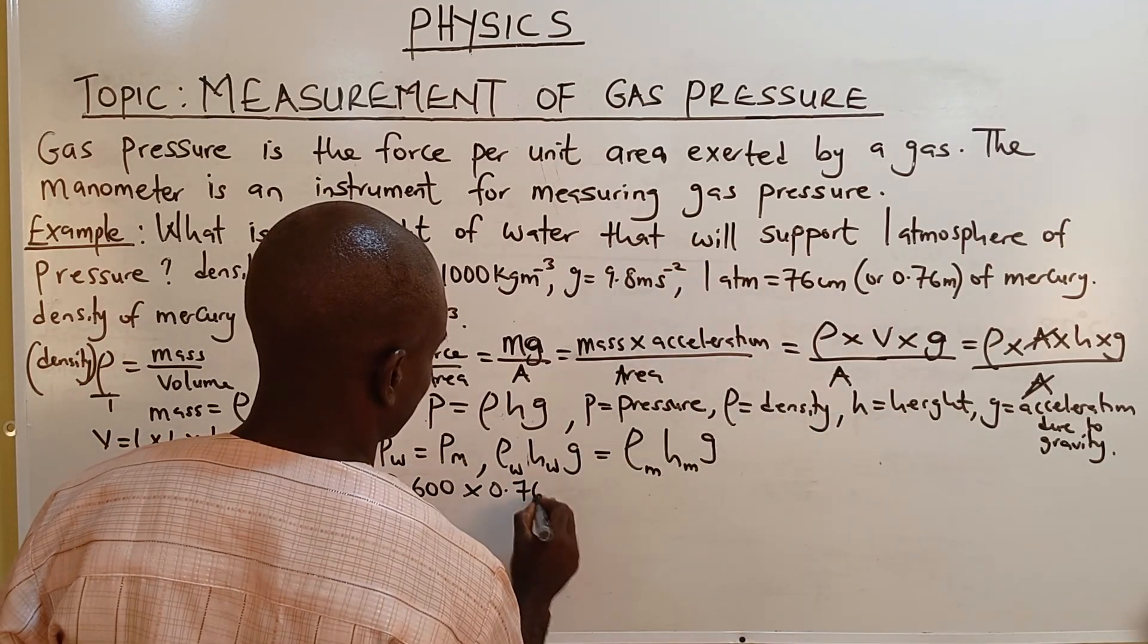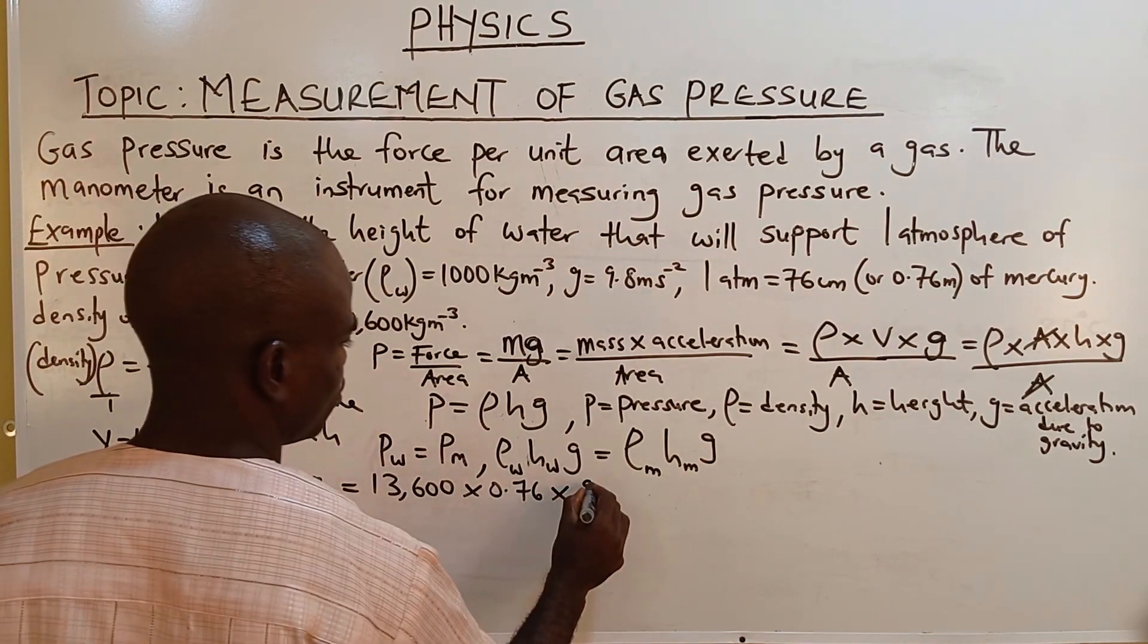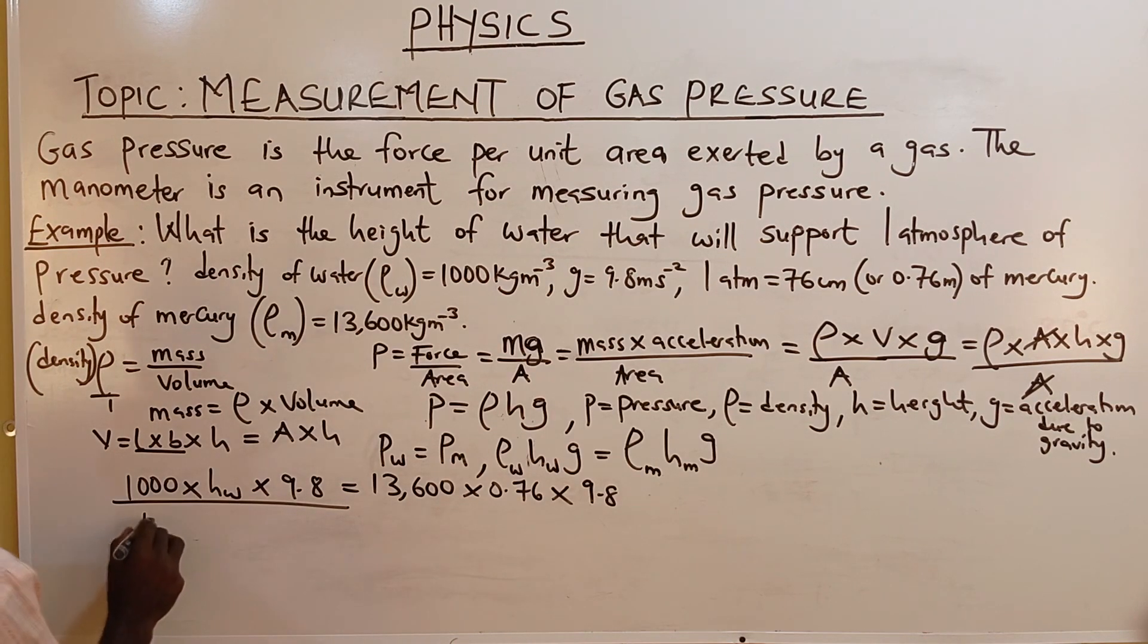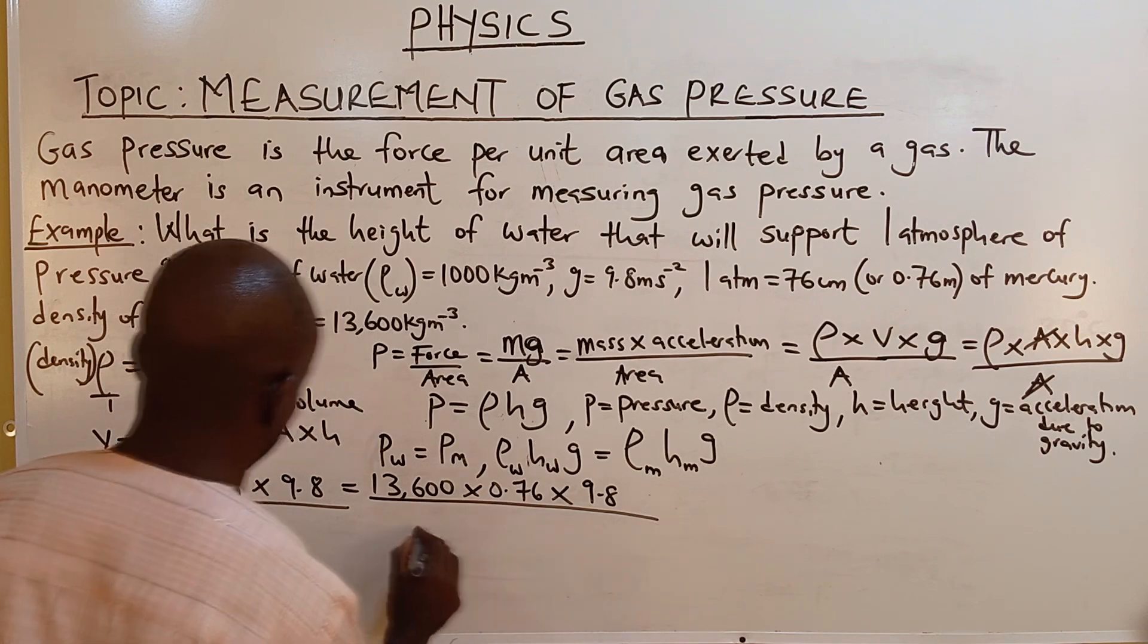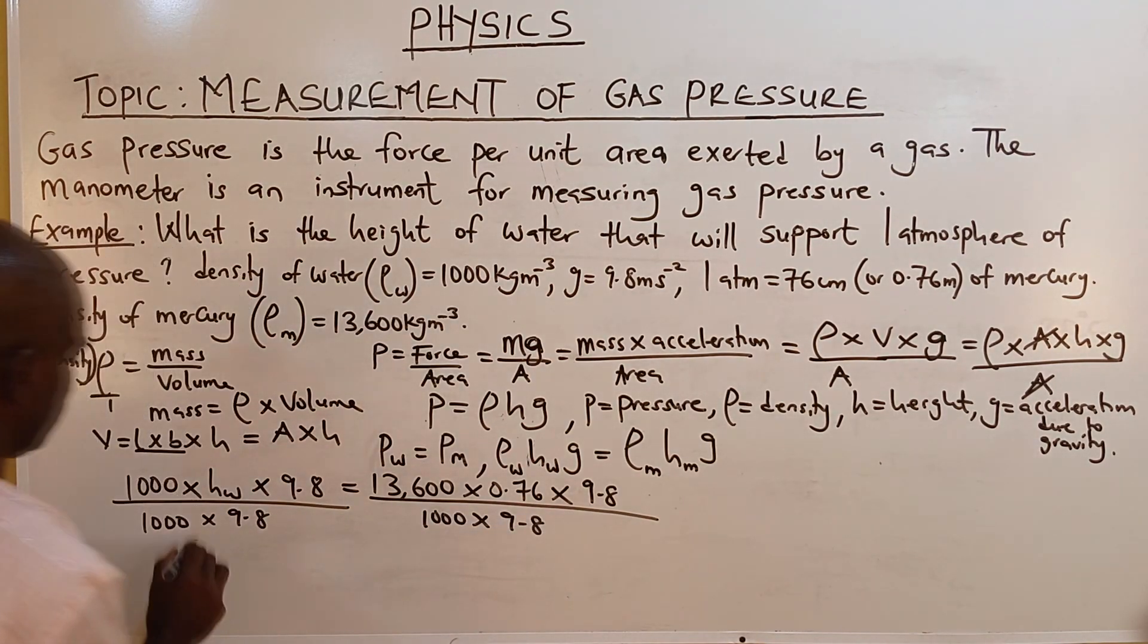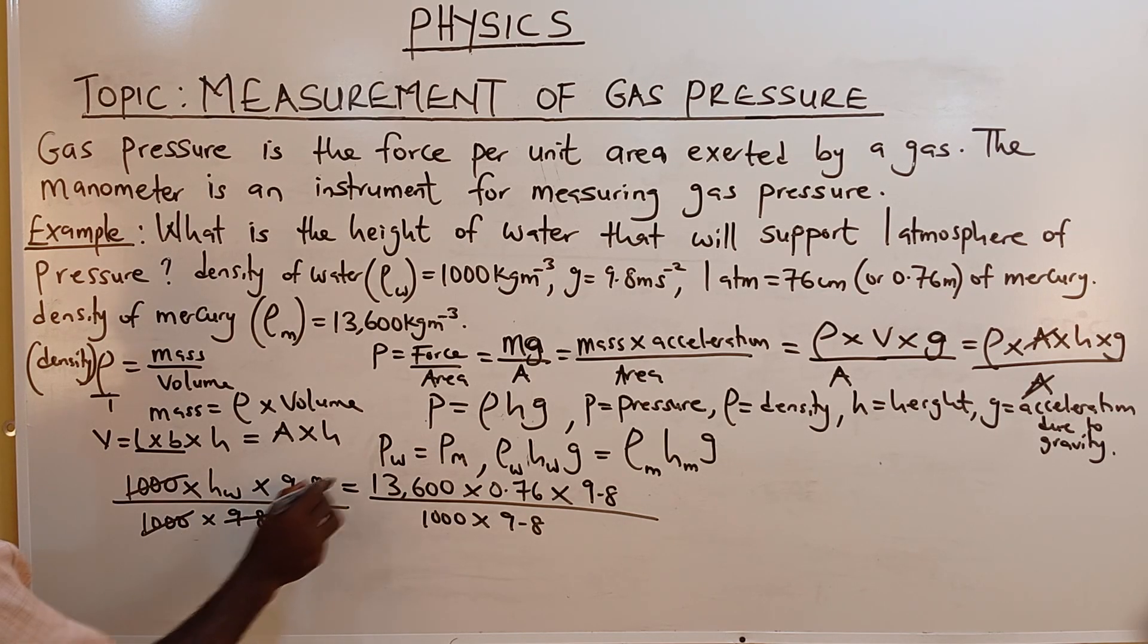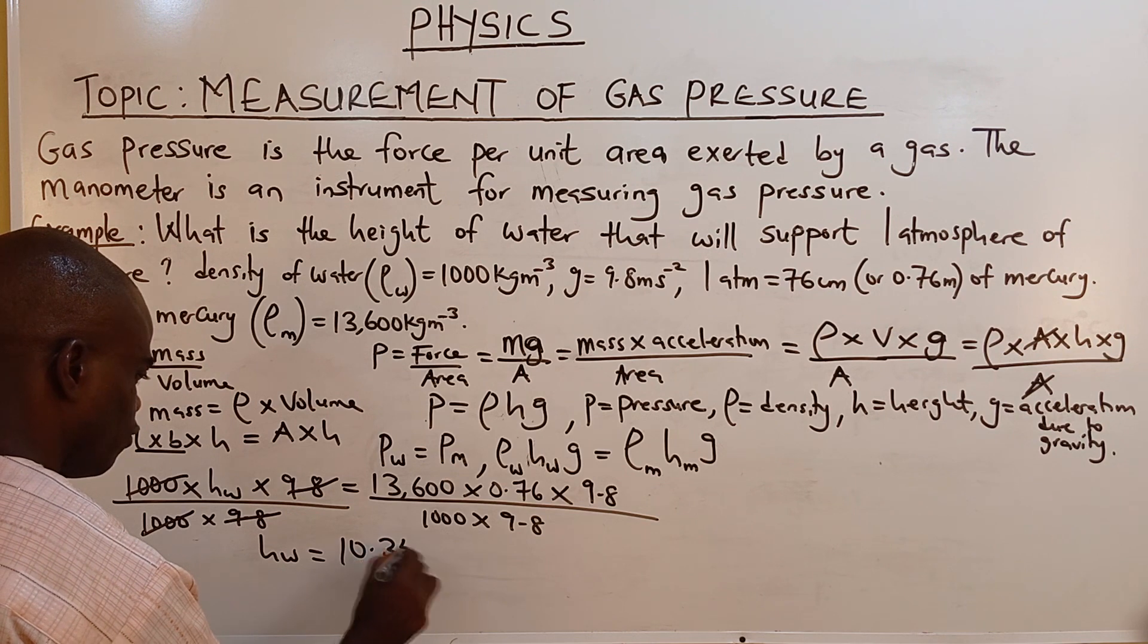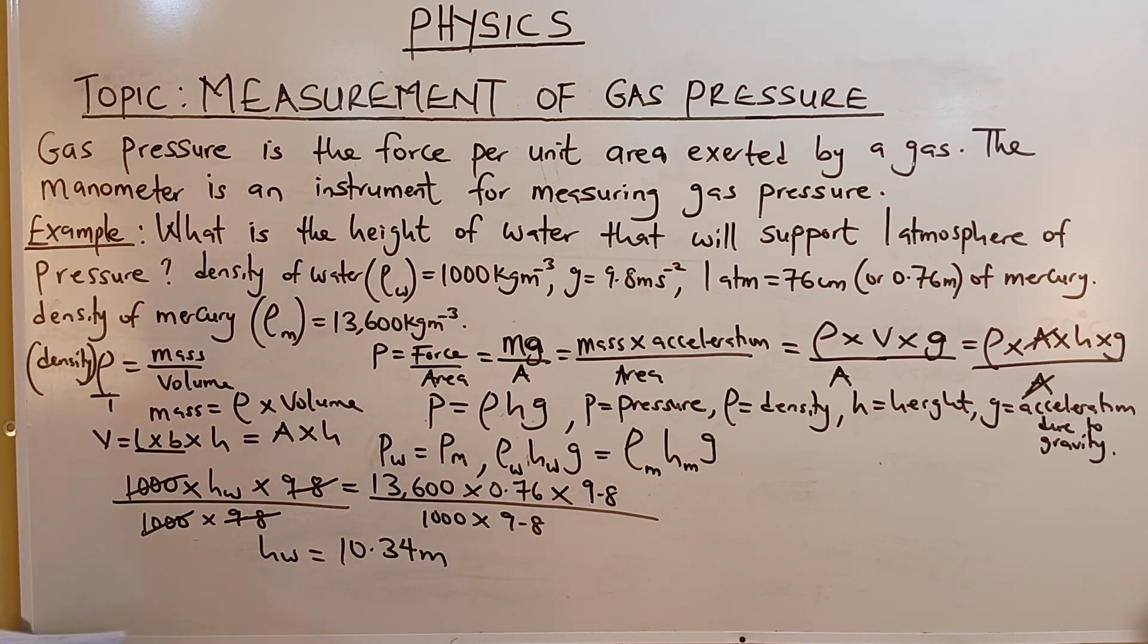0.76 times 9.8. The 9.8 cancels each other. We press our calculator very well. The answer is 10.34 meters. That is the height of the water.